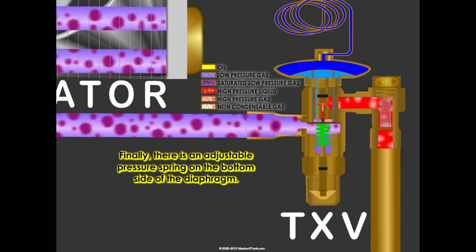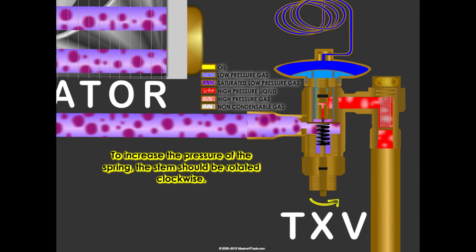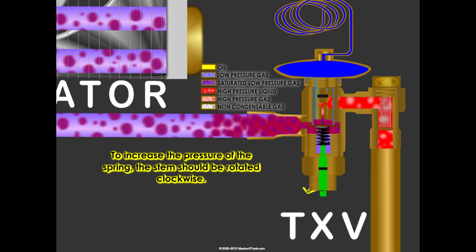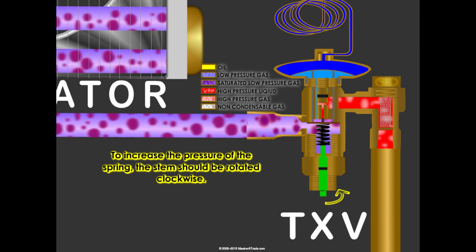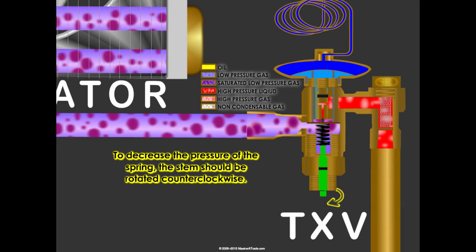Finally, there is an adjustable pressure spring on the bottom side of the diaphragm. To increase the pressure of the spring, the stem should be rotated clockwise. To decrease the pressure of the spring, the stem should be rotated counterclockwise.